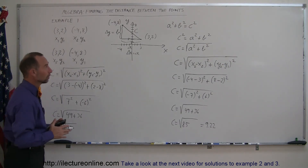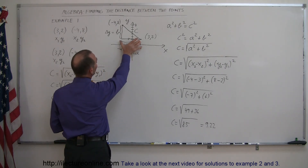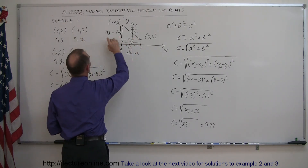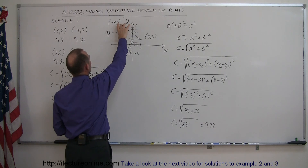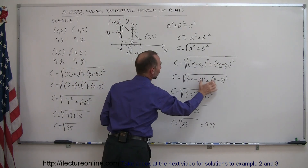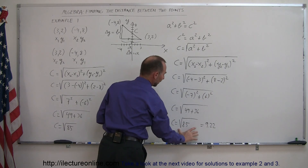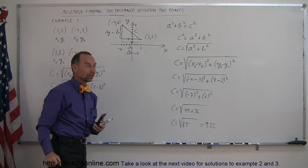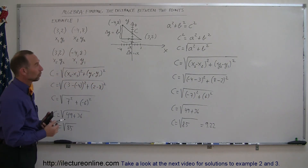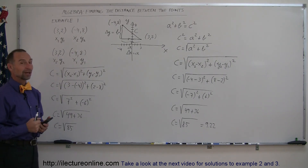To find the distance between two points: find the difference between the two x-coordinates, find the difference between the two y-coordinates, square those differences, add them together, take the square root of that sum, and you get the distance between any two points on the coordinate system. That's how you do it.